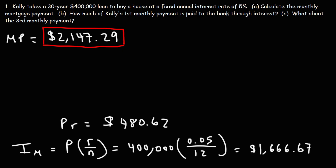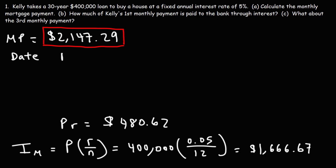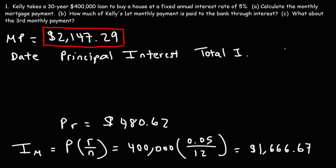Now let's create an amortization schedule so we can find out how much interest is paid in the third monthly payment. We'll make several columns: the date, how much of the payment goes into the principal, how much goes to interest, the total interest paid, and the remaining balance.